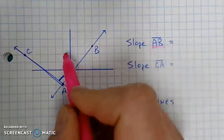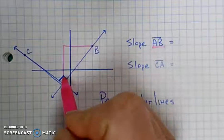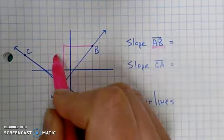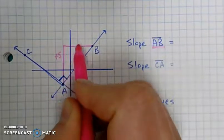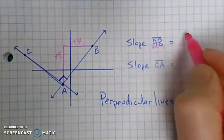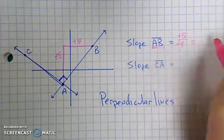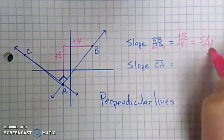So from A to B, it looks like the slope of this is rising 1, 2, 3, 4, 5, and it runs 1, 2, 3, 4. So the slope of AB is going to be a positive 5 divided by a positive 4, which doesn't really simplify. I'll just leave it as 5 fourths.